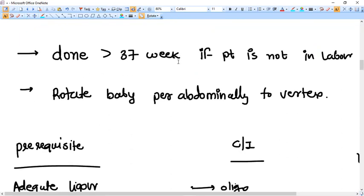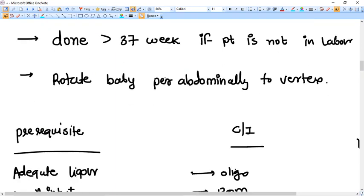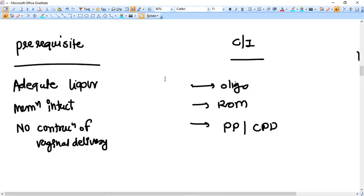You might get abruption placenta. You might get your cord around neck tighter. So it is not done in nowadays practices. But for theory purposes you should remember. What are the prerequisite of doing external cephalic version? There should be adequate liquor. There should be the membranes should be intact. There should be no contraindication of vaginal delivery. And all this prerequisite if not present becomes the contraindication of external cephalic version.